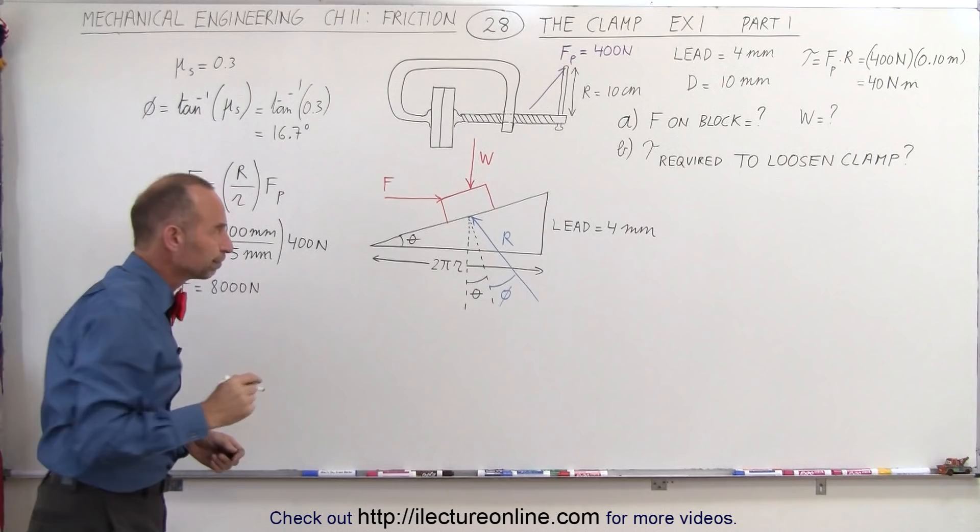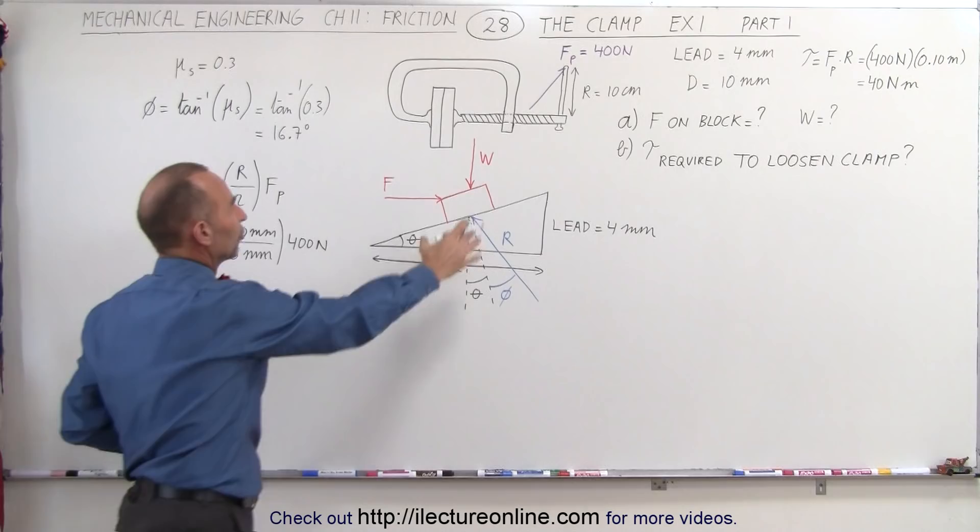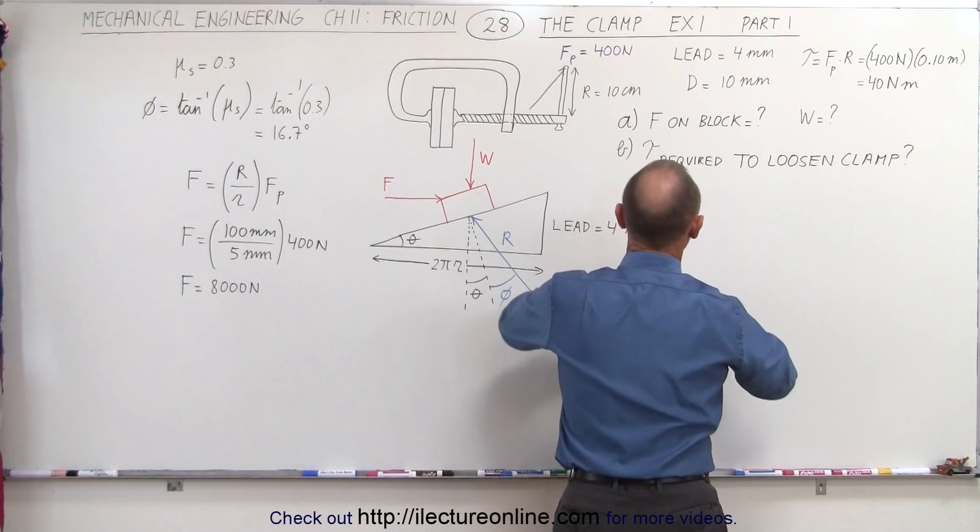All right, now what we're going to do is we're going to draw a triangle summing all these forces together. So we have the weight of the screw, which is what we're looking for. That's a W.